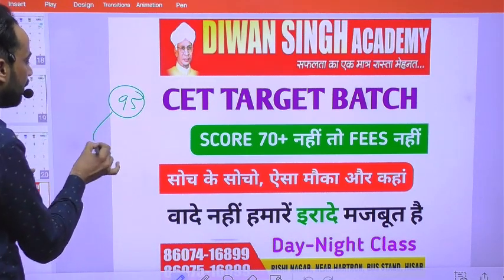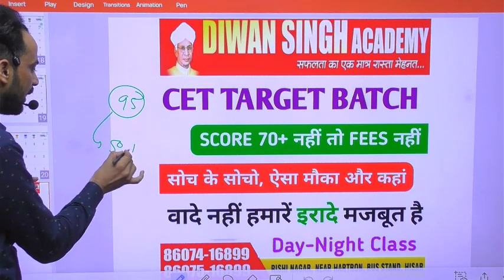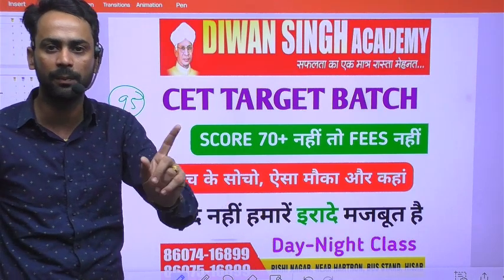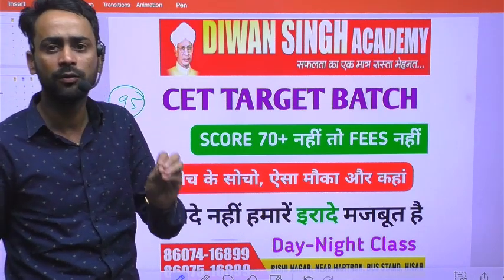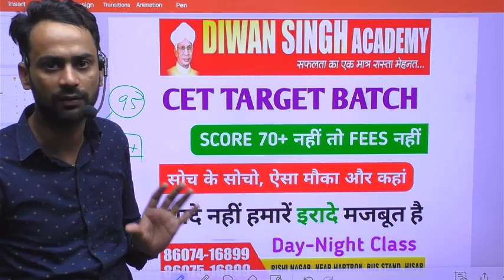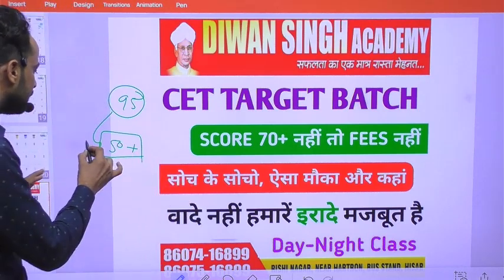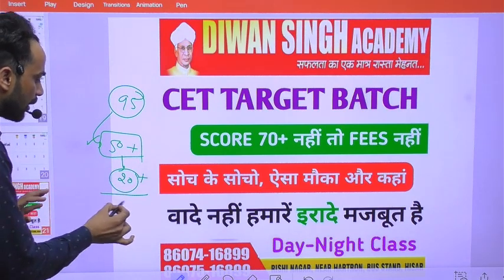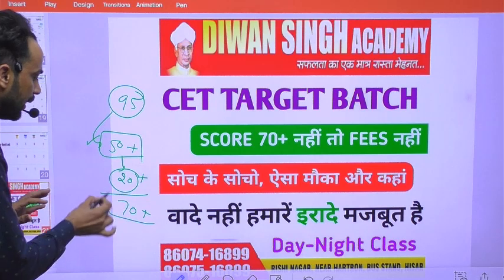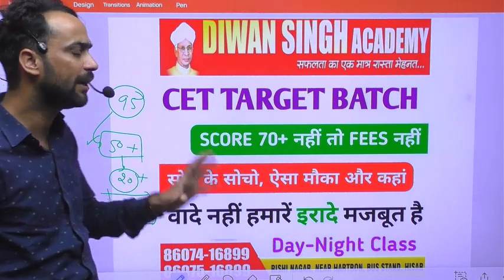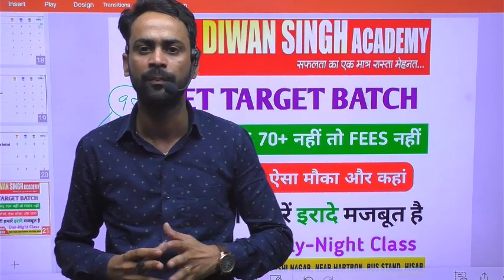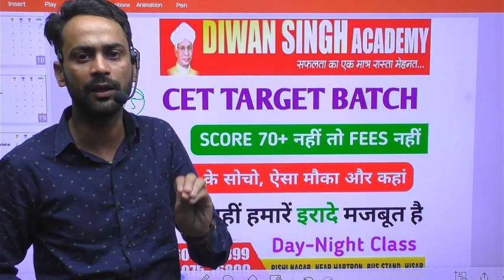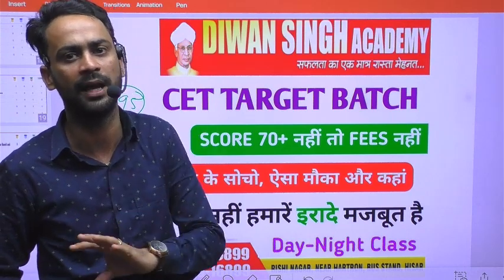In the previous test, if someone gets 50 marks or above, 50 plus or 50 marks, only they will be taken in the target batch. Others will not be taken in the target because those who cannot score 50 cannot score 70. Those who score 50 will be prepared for maximum 20-25 marks more to reach 70. But if someone cannot score 50, they will be admitted in the normal 9 to 2 batch or will be seated in target batch but without the 70+ guarantee.